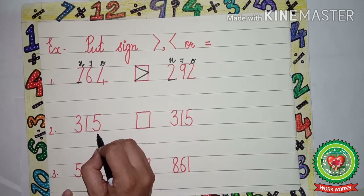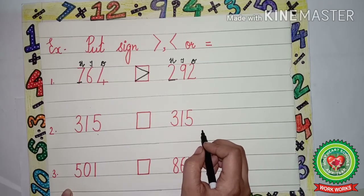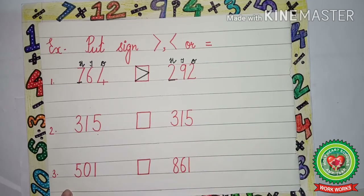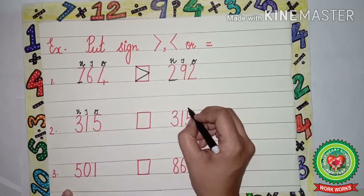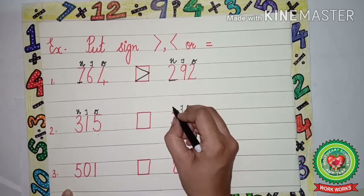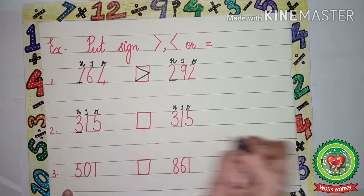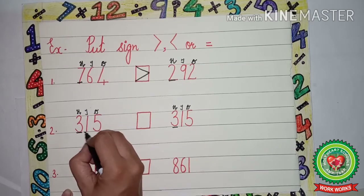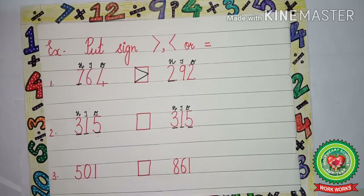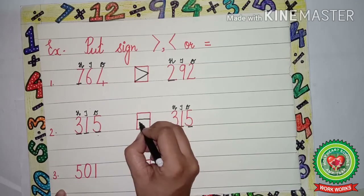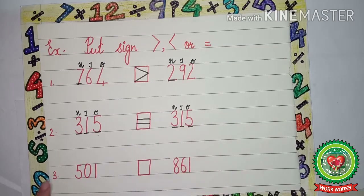Next is 315 and 315. We will write the place value chart. The digits are: 3 and 3, 1 and 1, 5 and 5. Both numbers are the same on both sides, so we will put the equals to sign here. We put the equals to sign where both numbers are equal.